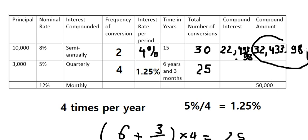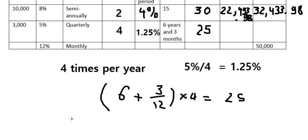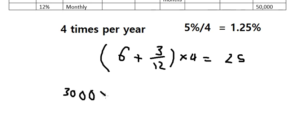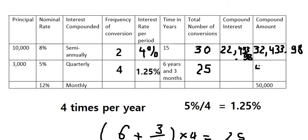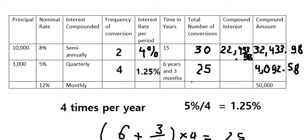The principal is 3,000. Applying the formula: 3,000 multiplied by (1 plus 1.25%) to the power of 25. We calculate this and get 4,092.58 as the compound amount. Subtracting the principal, compound interest equals 1,092.58. That's the answer for question number two.